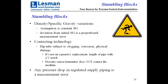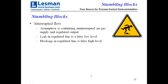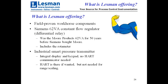What Lesman offers: field-proven workhorse components. The Siemens 62VA constant flow regulator is the same one originally from Moore Products — sold for 50 years before Siemens bought Moore, giving it a 60- to 70-year history in bubblers and making it the absolute standard of the industry. It includes the rotometer for visual flow indication. We use industrial smart pressure transmitters — Siemens units with HART, an integral keypad and display so you can reconfigure in the field without HART. We put the coalescing filter right in the panel. There's a big display on the front to read level, and an optional push-button purge — hold the button in, air flows down the tube and purges it. The panel comes built, tested, and ready to install, ranged to your specification.